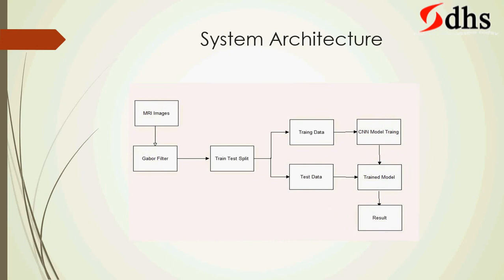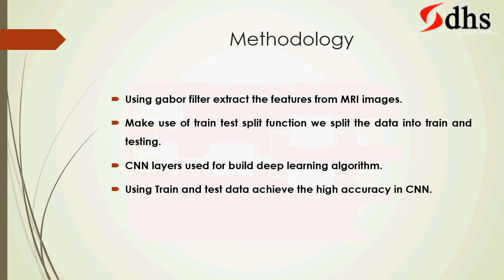The procedure we follow: first, we collect MRI images, then apply the Gabor filter to extract features. We split those features into training and testing sets, train our model, and then test it to get the overall accuracy. This is the system architecture we are proposing. Using the Gabor filter for feature extraction, splitting the data, building the CNN layers, and evaluating with training and test models achieves high accuracy.